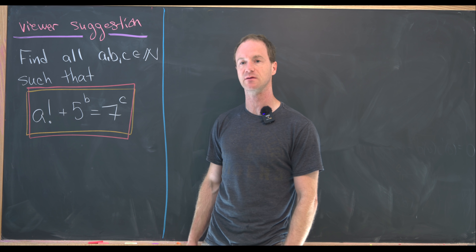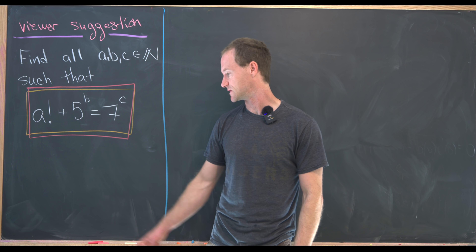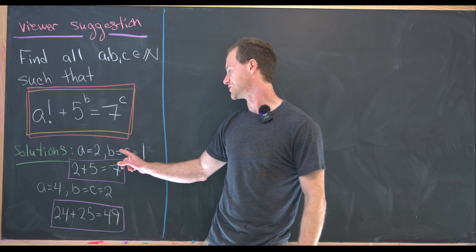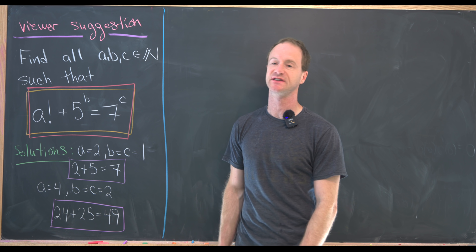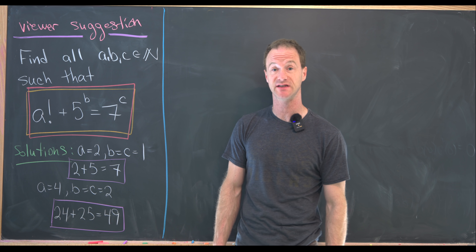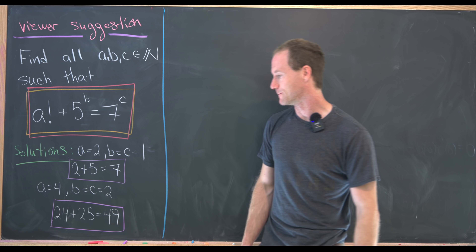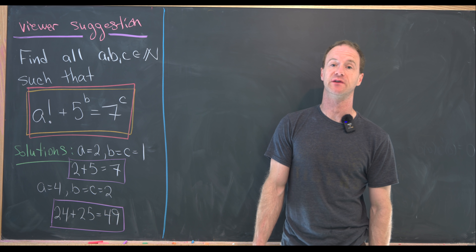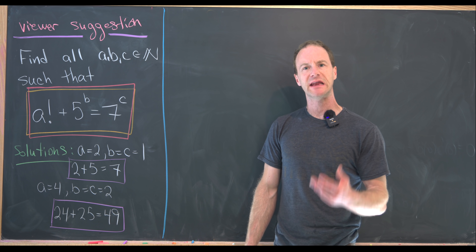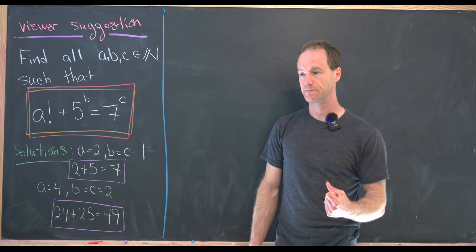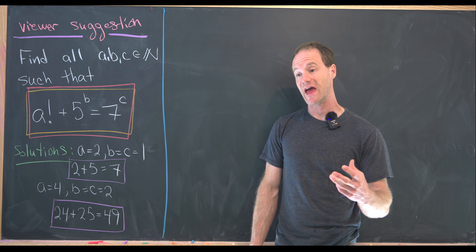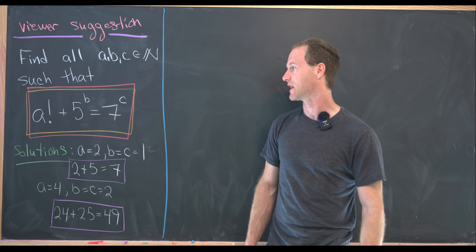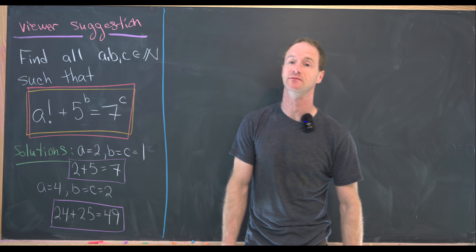Let's get those solutions on the board and then we'll prove they are the only solutions. We have a=2, b=c=1, giving the equation 2 plus 5 equals 7. And a=4, b=c=2, giving 24 plus 25 equals 49. Now we want to use the fact that a factorial is a multiple of every number less than or equal to a, which will be extremely helpful to eliminate a ton of cases immediately.